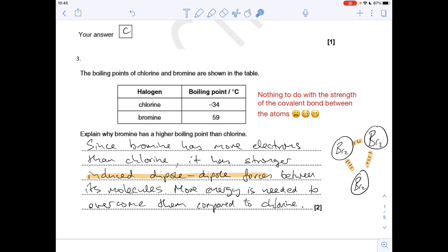Moving on, number three. This is a classic question of comparing the boiling points of a couple of halogens. You can see chlorine's got a lower boiling point than bromine. I've got to explain why. It's got nothing to do with the strength of the covalent bond between the atoms. Many times I stress that, nothing to do with that bond strength, and yet students still write it. If you think about bromine, it's a simple covalent molecule.